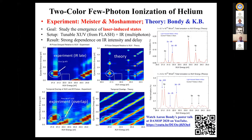Another experiment was done at Heidelberg: you have an XUV and an IR that you can delay. In extreme cases — when the IR is late, or when the two pulses overlap — the well-known effect is that during overlap you can have light-induced states: you do something with the XUV but then absorb or emit one or two IR photons. Aaron Bondy, a visitor at Drake, gave a nice talk about that at Daymob as well.